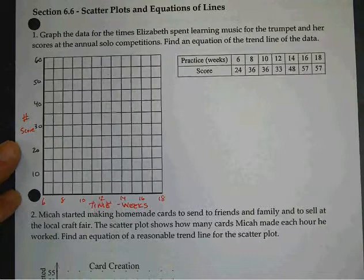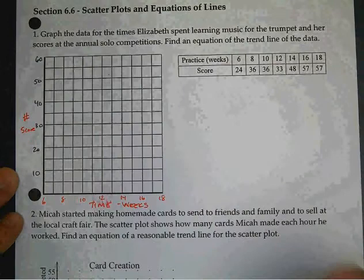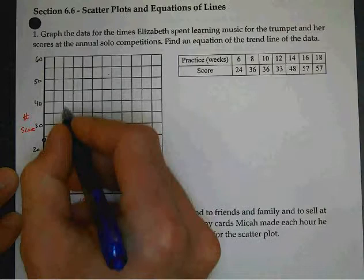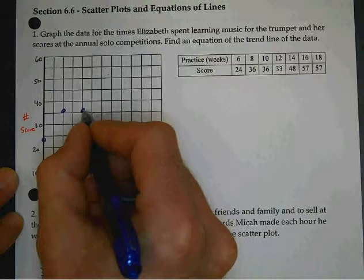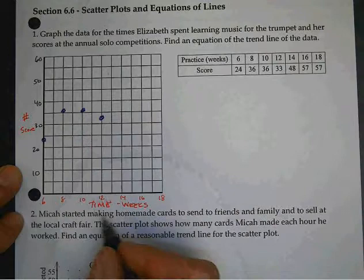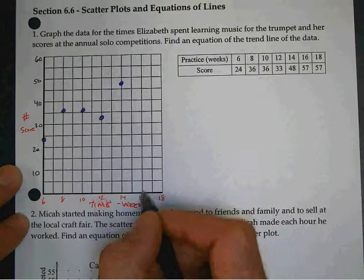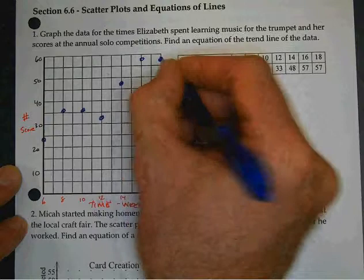Six and twenty-four. Go ahead and plot all the points. Six, twenty-four. Eight, thirty-six. Ten, thirty-six. Twelve, thirty-three. Fourteen, forty-eight. Sixteen, fifty-seven. And eighteen, fifty-seven. So, that's all the data.